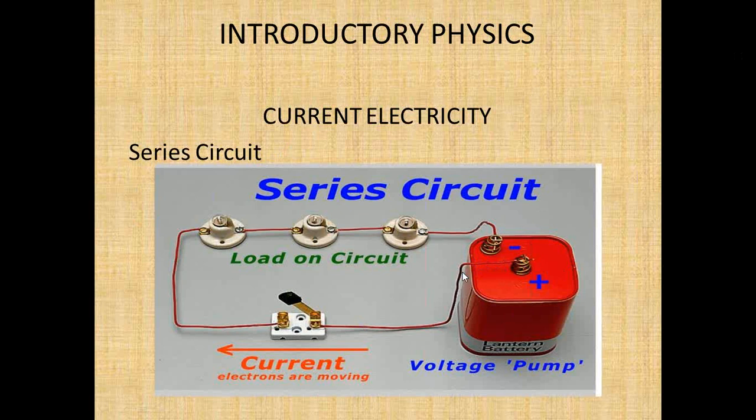There is a switch here. The switch will complete the circuit. When the switch is open, the circuit is not complete. When you close the switch, the circuit is complete. These are the electrical devices, or we call them the load. In the circuit, you represent them as resistors. So you have one, two, three.